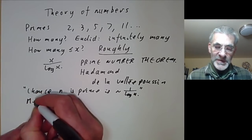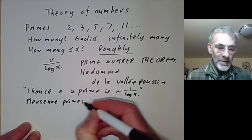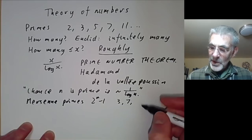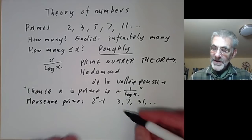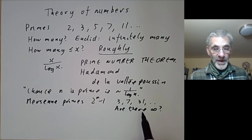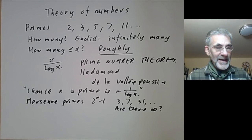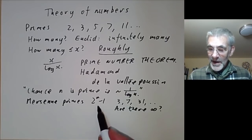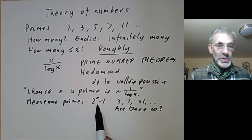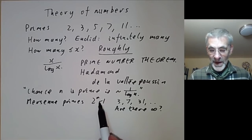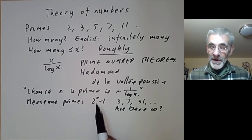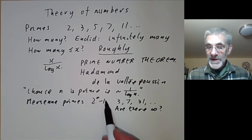There are also special sorts of primes. Two very famous examples are Mersenne primes, which are primes of the form 2 to the n minus 1. For example, 3, 7, and 31 are all 1 less than a power of 2. Whether there are infinitely many Mersenne primes is an unsolved problem. Incidentally, the largest known prime at any given time is almost always a Mersenne prime, because it's particularly easy to check whether a Mersenne number is prime.